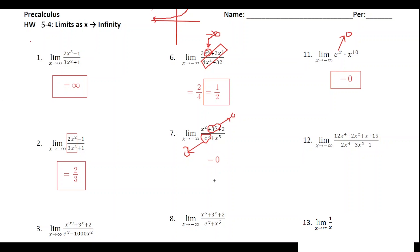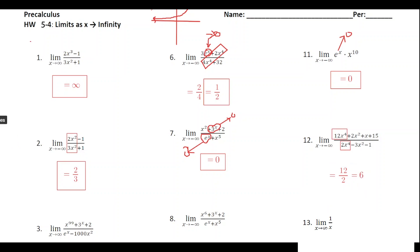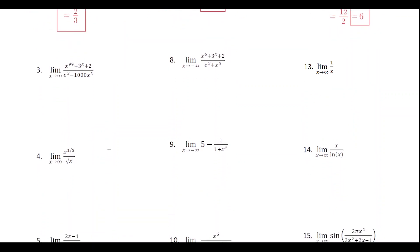For number twelve, we have the limit as x approaches negative infinity. Looking at all the terms, we have a polynomial on top and a polynomial on the bottom — both are fourth degree polynomials. When the degrees are the same, compare the leading coefficients: the numerator has a leading coefficient of 12 and the denominator has a leading coefficient of 2. So the horizontal asymptote is y equals 12 over 2, which is 6. The limit as x approaches negative infinity equals six.